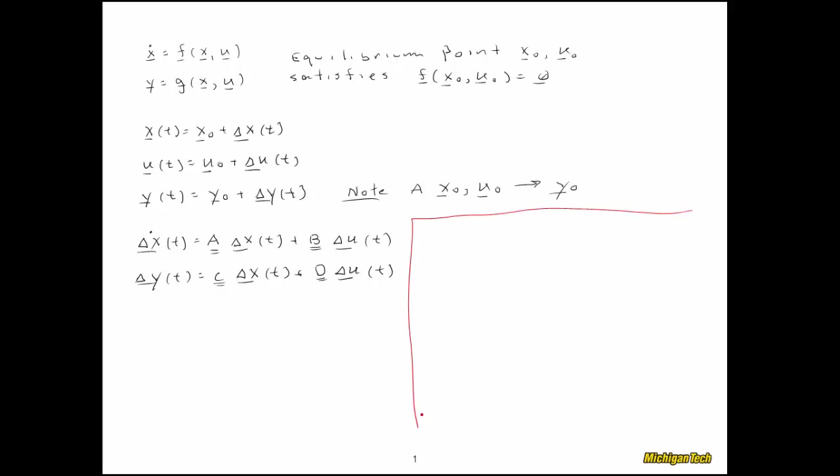When we do a Taylor series expansion and pull off the first term. And so that means that a is equal to the partial of f with respect to x evaluated at x zero, u zero. And similarly, we'll have a b, a c, and a d matrix. For the b matrix, it's partial of f with respect to u, the input. Again, evaluated at x zero, u zero. And then c and d look very similar, except they're the partial of g with respect to x for c, and the partial of g with respect to u for d.